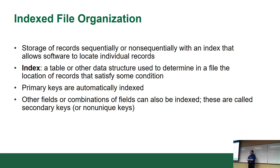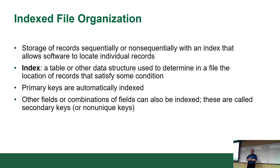Primary keys are automatically indexed — they're always indexed, they cannot be not indexed. By nature, primary keys are used to find records quickly, therefore they have to be indexed. Other fields or combinations of fields can also be indexed. These are known as secondary keys or non-unique keys. You can index a single field or multiple fields — there are advantages to both.